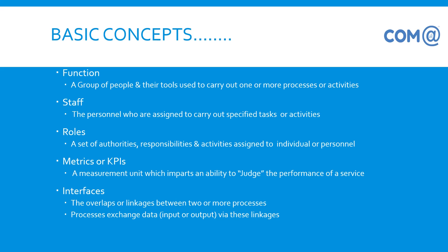Metrics or KPIs: since a process is measurable, we have to measure it and publish the results. Interfaces refer to overlaps or linkages between two or more processes — for example, there is an overlap between Incident Management, Change Management, and Problem Management.